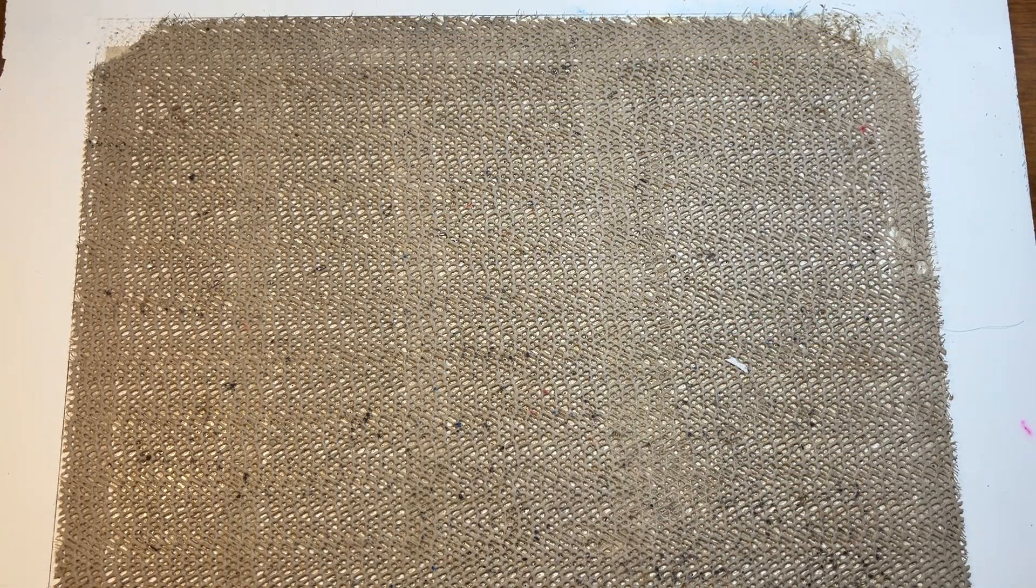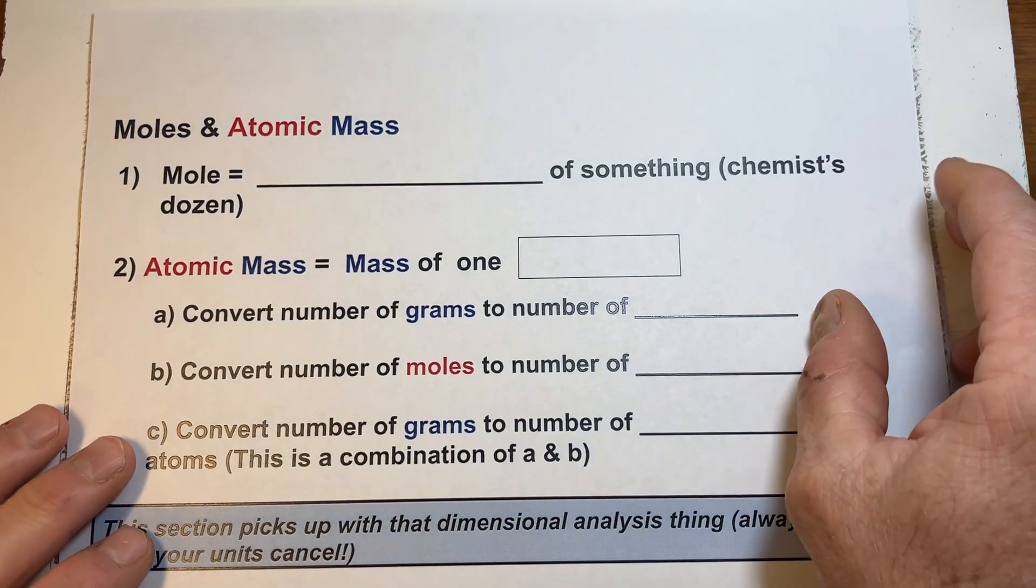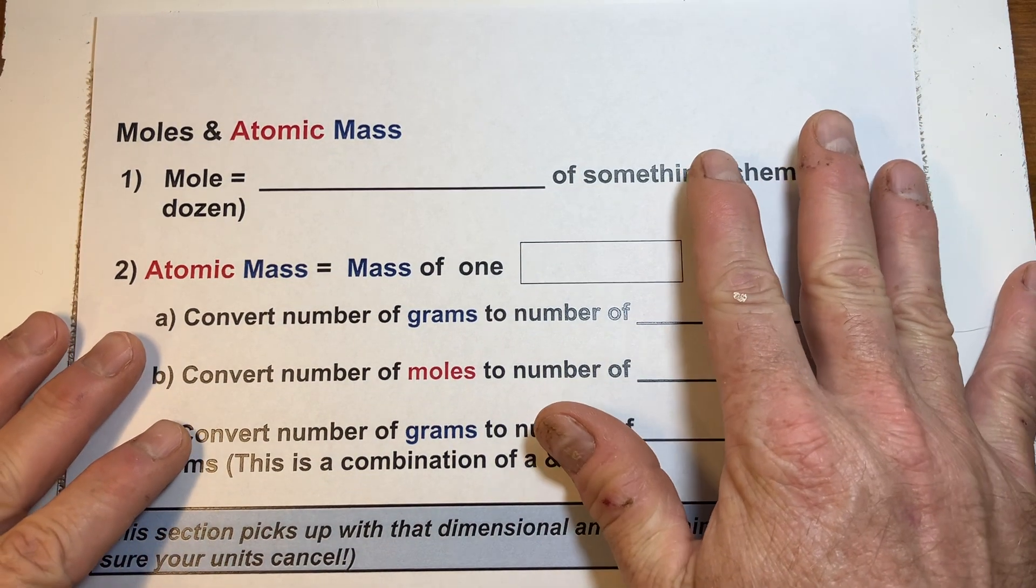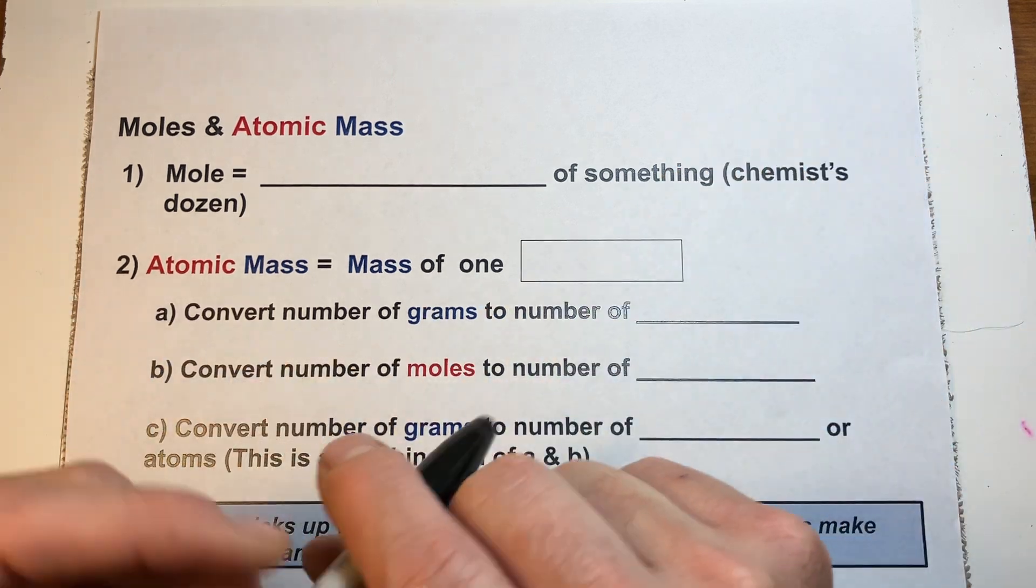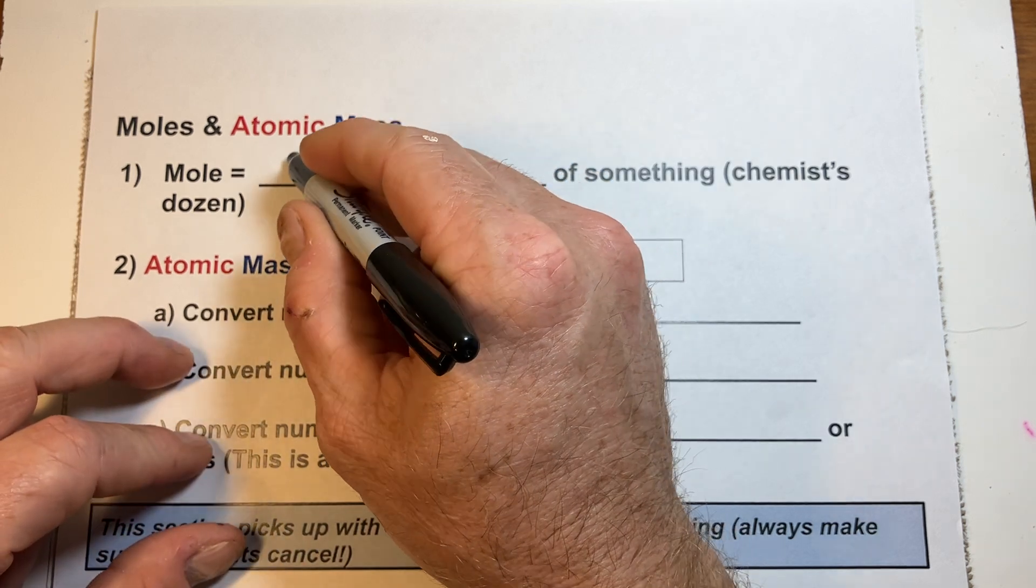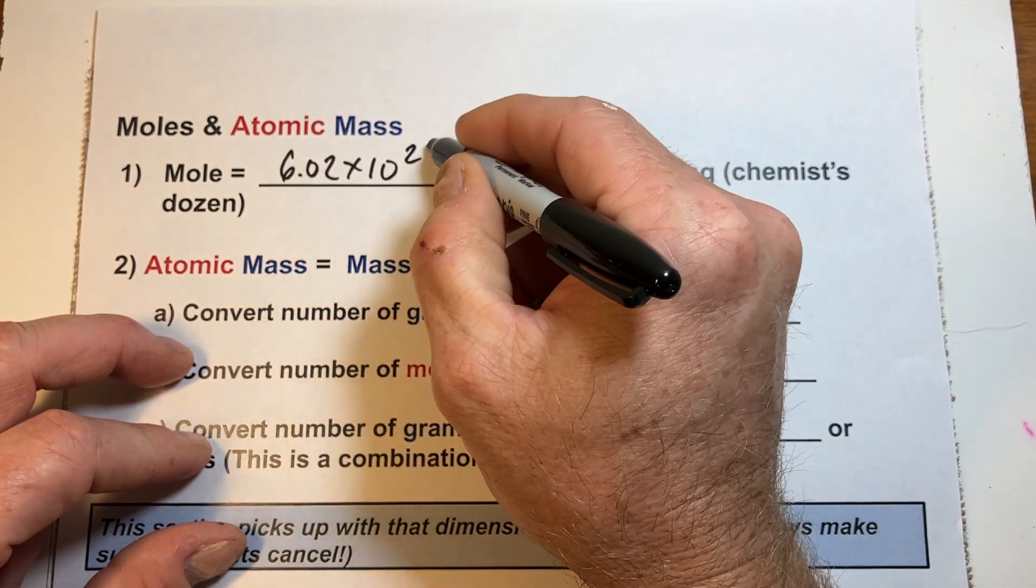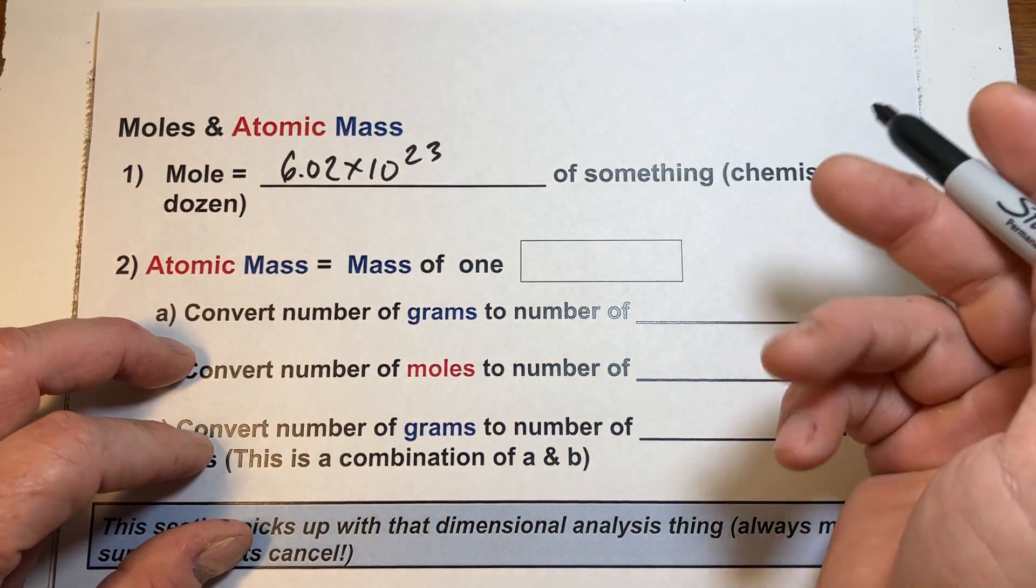We can use this number, the mole, to do a lot of things. So, again, don't forget, we know the mole represents just basically as an amount of something, not weight of something, but the number of. It represents 6.02 times 10 to the 23rd of something, whatever it is.